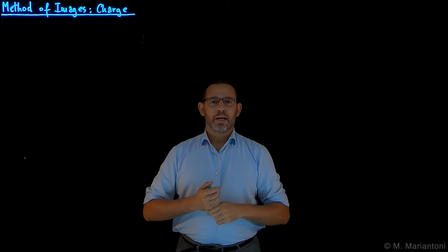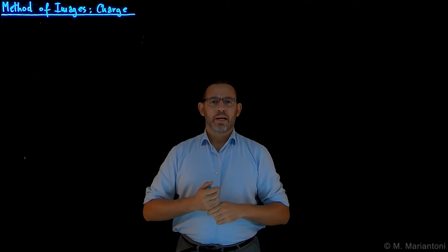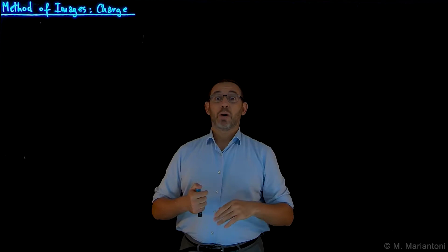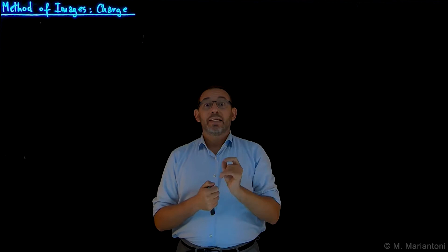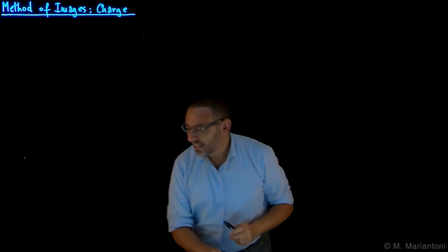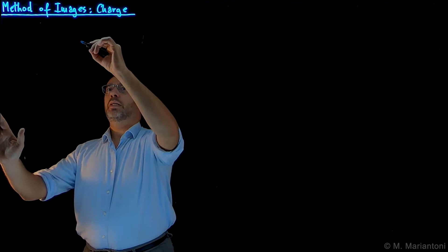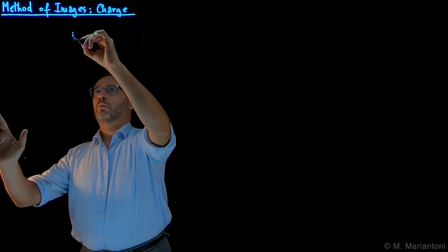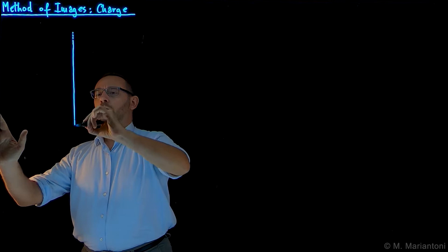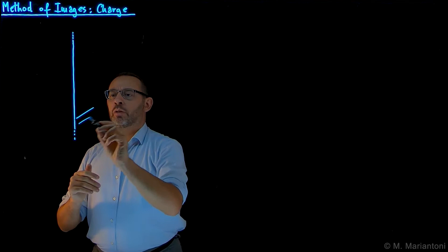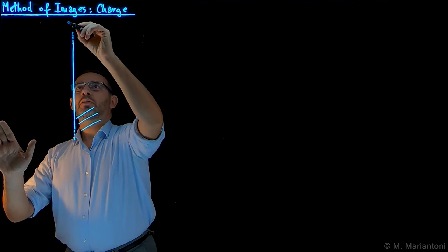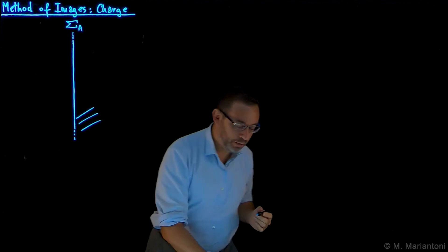This is a special case of the general case we investigated in the previous video, which was about the Method of Images dipole, and is the case where the surface we are going to consider is capital sigma A instead of the curved one, which was capital sigma B. So let us sketch this scenario here in 2D. This is the face of our semi-infinite slab, located on the right hand side — capital sigma A — which is an equipotential surface as we have seen in the previous video.